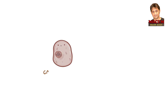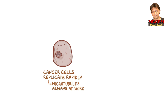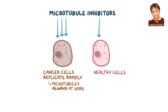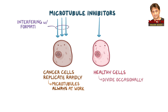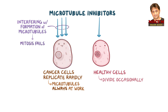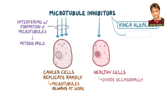Cancer cells replicate rapidly, so they're constantly undergoing mitosis and the microtubules are always at work. This means that microtubule inhibitors will affect these cells more than healthy cells, most of which only divide occasionally. Interfering with the formation of microtubules will cause mitosis to fail, and the cell will eventually die without replicating. The two commonly used anticancer microtubule inhibitors include the vinca alkaloids and the taxanes, and all are given intravenously.